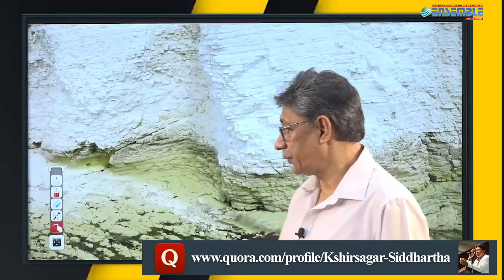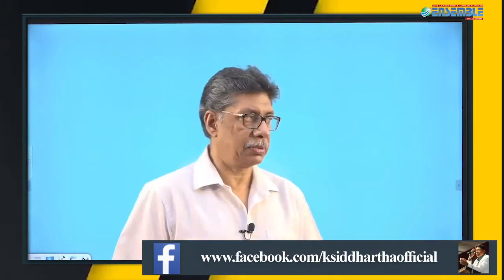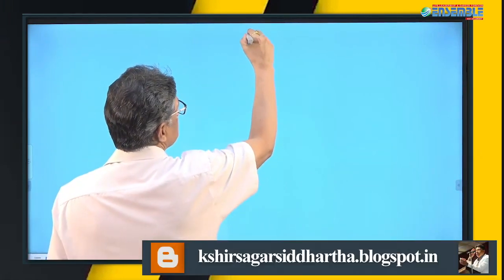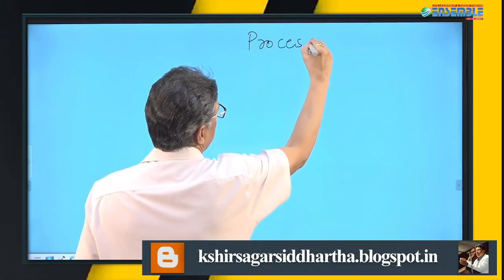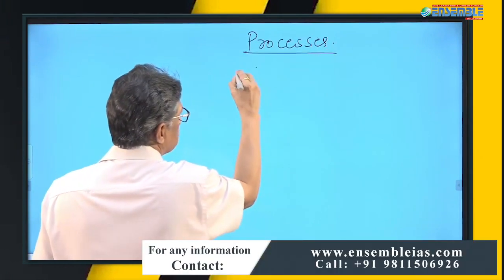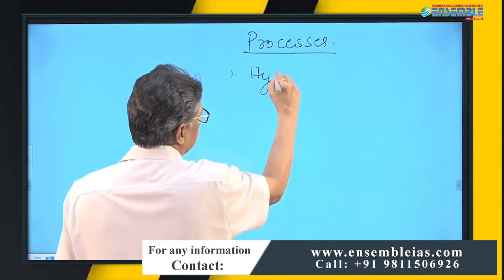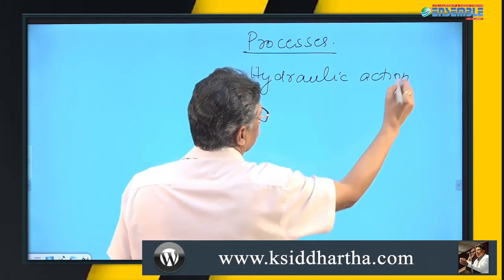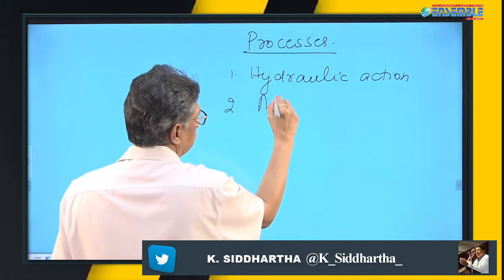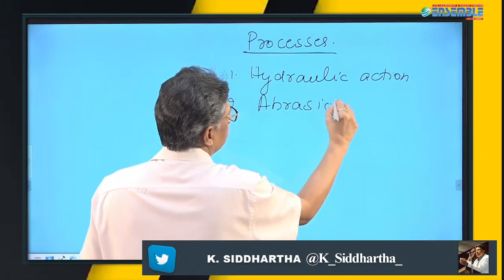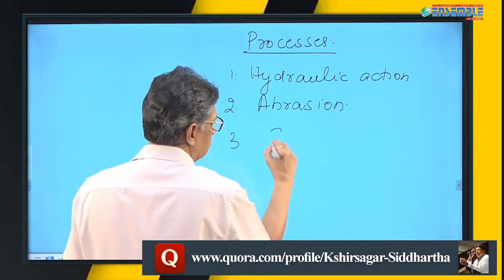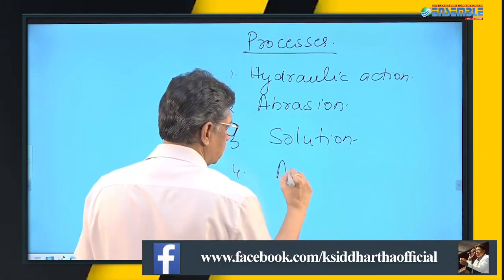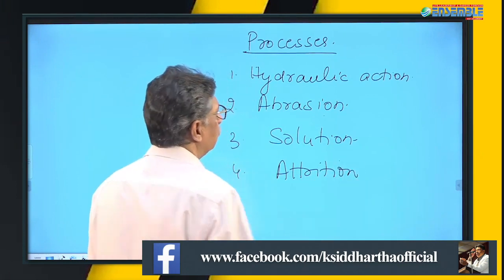Near the coastal topography, features are developed through certain processes. The four processes are: first, hydraulic action; second, abrasion; third, solution; and fourth, attrition.